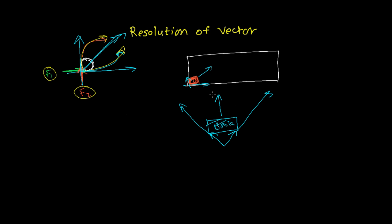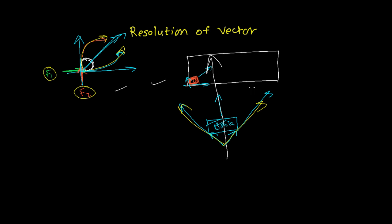So why am I giving these two or three examples? Because this is exactly the resolution of vector. Applying one force directly along a diagonal is the same as applying one force along one side and another force along the other side, at the same time.